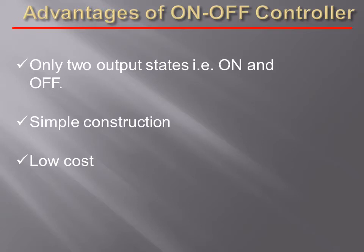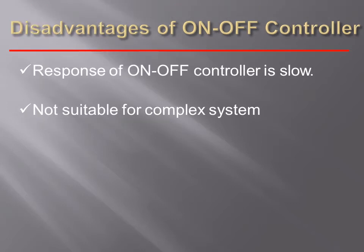Advantages of on-off controller: there are only two output states, i.e. on-state and off-state, and it is simple in construction as well as its cost is low. Disadvantages of on-off controller: the response of on-off controller is slow and it is not suitable for complex systems.